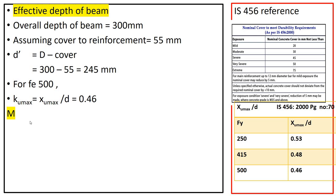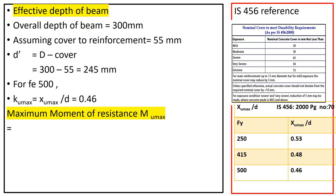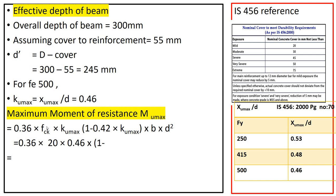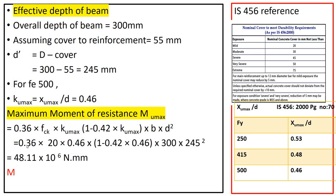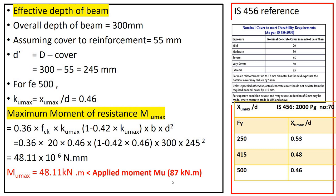Now let us calculate the maximum moment of resistance. The maximum moment of resistance equals stress times area: 0.36·fck·xu,max, multiplied by b·d², multiplied by the lever arm (1 − 0.42·xu,max). Putting in all the values, the maximum moment of resistance comes out to 48.11 kilo-newton meters. But our applied moment is 87 kNm, so the moment of resistance is less than the applied moment.